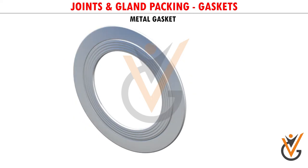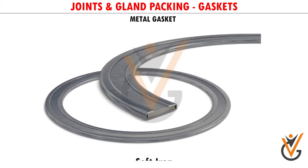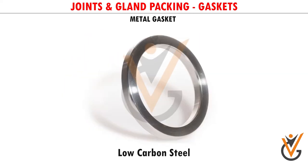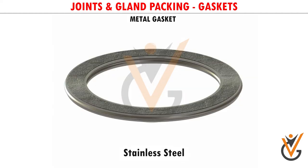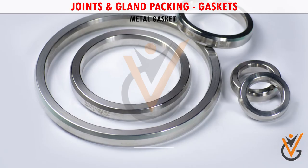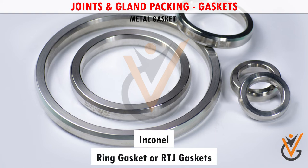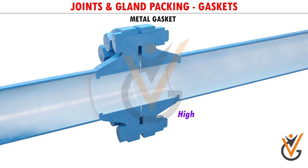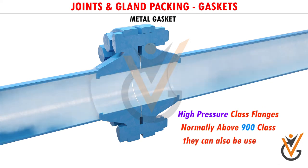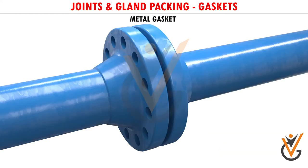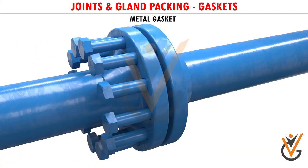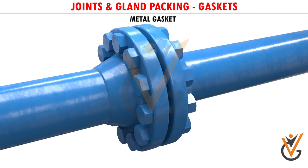Metal gaskets. Metal gaskets are manufactured from materials such as soft iron, low carbon steel, stainless steel, monel, and inconel. These gaskets are also known as ring gaskets or RTJ gaskets. Metallic gaskets are used in high pressure class flanges, normally above 900 class, and can also be used for high temperature. High tension bolting is required when using metallic gaskets. They are very robust and the most costly.